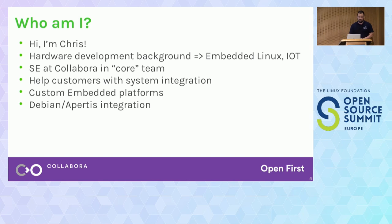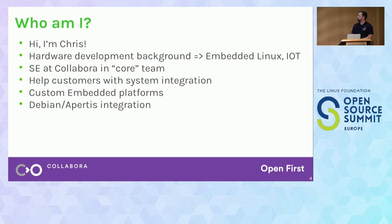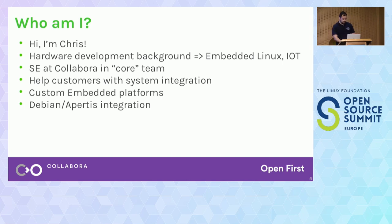So I'm Chris. I've got a hardware development background with embedded Linux, IoT, bare metal stuff, things like RTOS. These days I'm a senior engineer at Collabora working on a lot of software products, so I think my hardware background makes me see software in a different way. I work in the core team at Collabora where I help customers with system integration, usually around Debian and Apertis on their custom embedded platforms — things like software upgrades, packaging, that kind of stuff — and I'm always keen to learn more and check out new things in the embedded world.